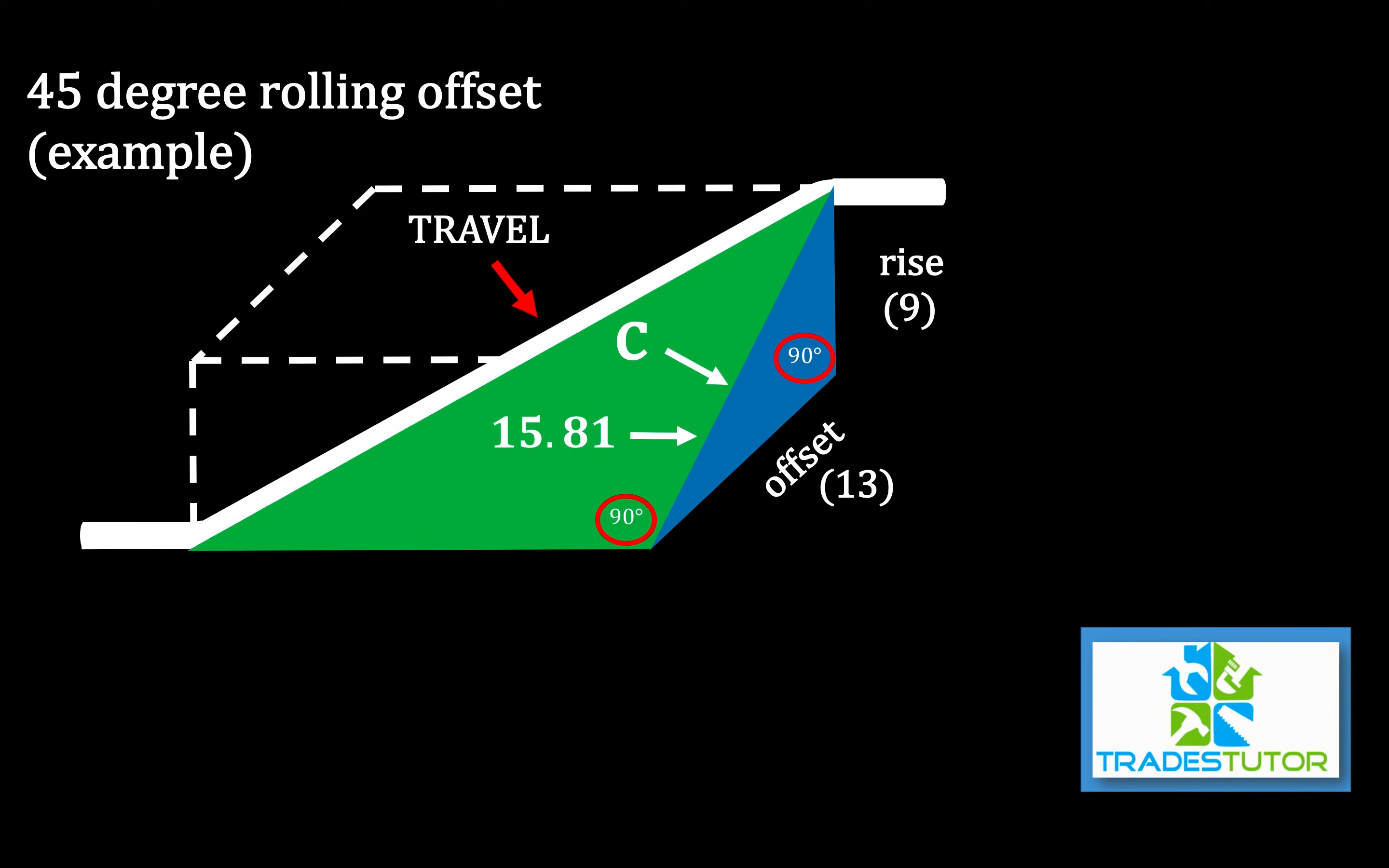Now, don't forget this. We're talking about now in the green triangle, we have one side of it, but we got a 45 there and a 45 there. What that means is that that side is also 15.81. The two sides are the same.